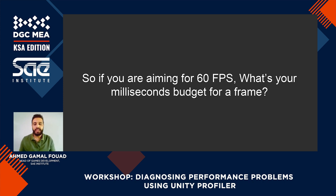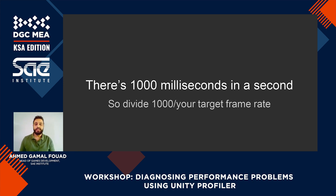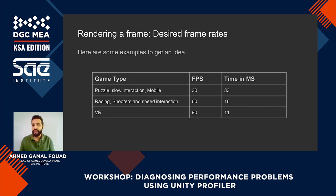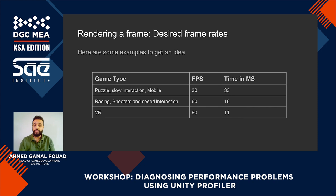So if you're aiming for 60 frames per second, what's the millisecond budget for a frame? The answer is simple once you remember there are 1000 milliseconds in a second — just divide 1000 by your target frame rate to get how many milliseconds any frame can have. For 30 FPS, that's 33 milliseconds. For 60 FPS, you get 16 milliseconds. For 90 FPS, you have just 11 milliseconds. Both your logic code on the CPU and the GPU should not exceed this time.